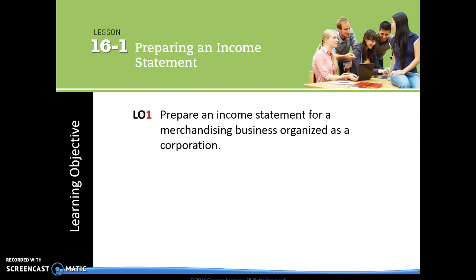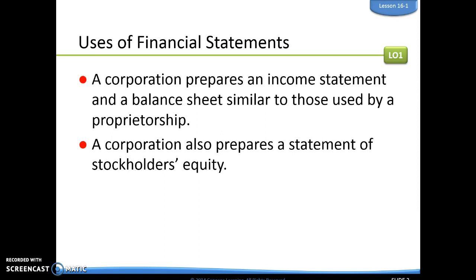After we did our adjusting entries in Chapter 15, now in Chapter 16, we're going to create some financial statements. For section 16-1, we're going to prepare an income statement. Our one learning objective is that you need to be able to prepare an income statement for a merchandising business organized as a corporation. We have created an income statement before, but the difference here is that we are creating one for a corporation. It's going to be similar to what we did with a proprietorship, but corporations are a little bit bigger and do things a little differently.